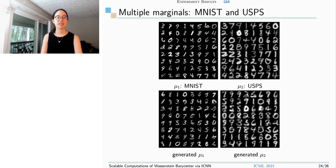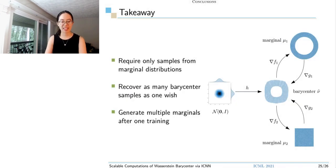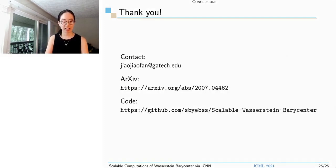These are all our examples. The final takeaway is that our method requires only samples from marginal distributions and we could recover as many barycenter samples as we wish because we have a generator. Also, we could generate all the marginal distribution samples after one training. Okay, thank you. Here are our arXiv link and GitHub code link. If you have any questions, please contact me or stop by our poster.